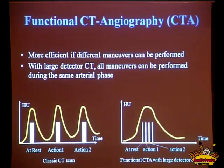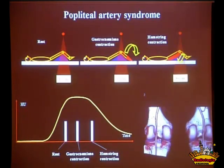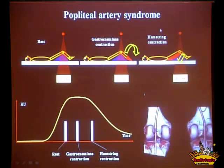An interesting technique possible with dynamic CT is functional CT angiography. We get to perform multiple maneuvers with a single contrast bolus. For popliteal artery entrapment syndrome, we do the examination in one phase at rest, then during gastrocnemial contraction and hamstring contraction. In this case, in both maneuvers there is a significant stenosis of the right popliteal artery compared to the other side.